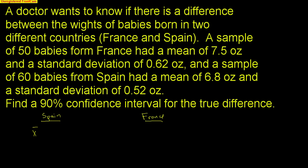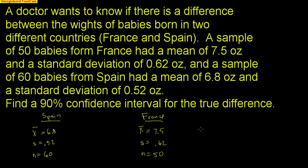For Spain: sample size = 60 babies, mean = 6.8 ounces, standard deviation = 0.52. For France: mean = 7.5 ounces, standard deviation = 0.62, sample size = 50 babies. It's really important to keep everything organized when these problems get complicated. It's pretty obvious that France was bigger than Spain. The observed difference was 7.5 − 6.8 = 0.7 ounces. I know it could be a little higher or lower since these were just two samples — that's exactly why we want a confidence interval for what that true difference could be.